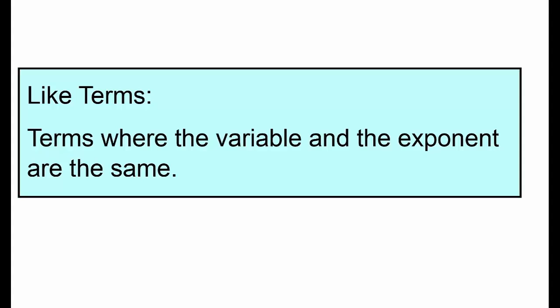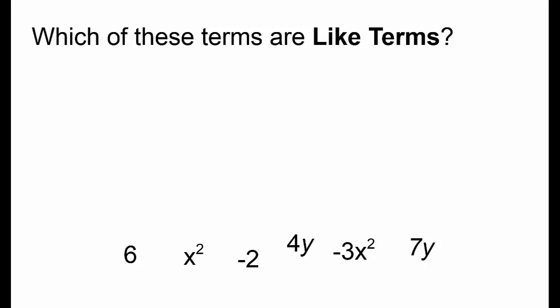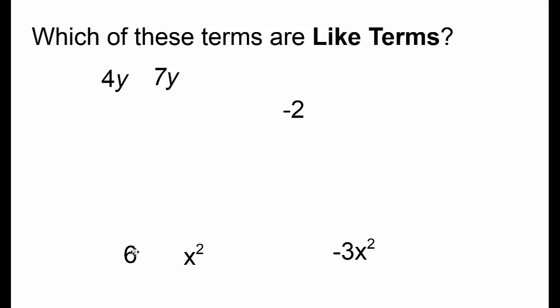Before we move on to the next example, let's review some important vocabulary. Like terms are terms where the variable and the exponent are the same. For instance, 4y and 7y are like terms because they have the same variable. Negative 2 and 6 are like terms because they're both constants. x squared and negative 3x squared are like terms because they both have the same variable x and the same exponent 2.